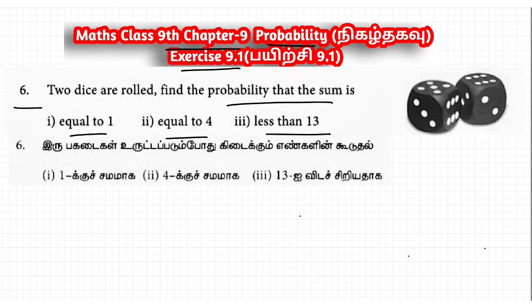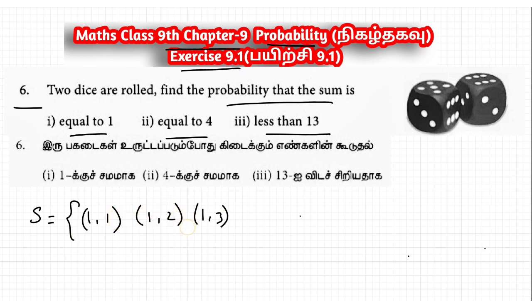Okay, two dice roll. Sample space. When the first die shows 1: (1,1), (1,2), (1,3), (1,4), (1,5), (1,6).